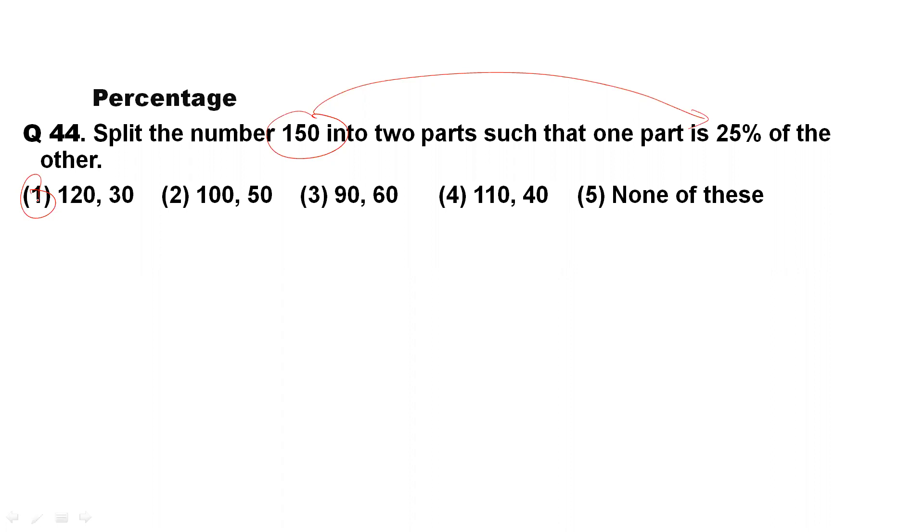So let me take option number first, any one part 25% of the other part. That means let me take the 25% that is equal to 25 divided by 100. That means it is equal to one by four. So this is one fourth.